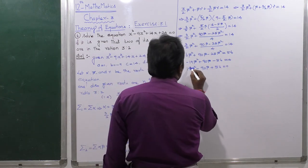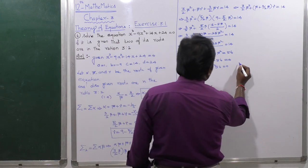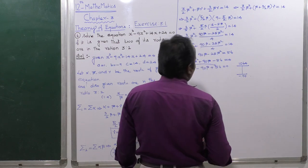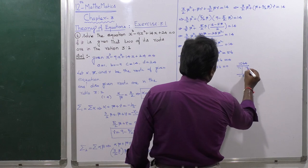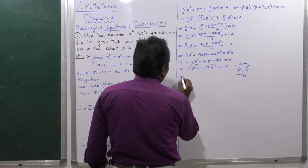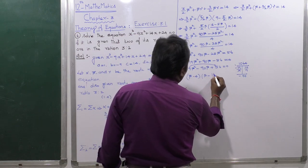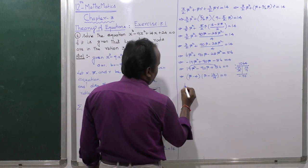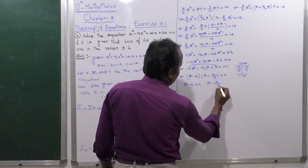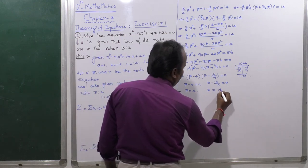To solve 19β² - 90β + 56 = 0, factorize by finding two numbers: 56 × 19 = 1064, with factors -76 and -14 summing to -90. This gives (β - 4)(β - 14/19) = 0, so β = 4 or β = 14/19.